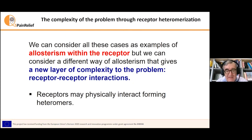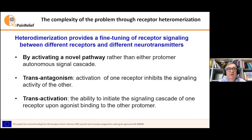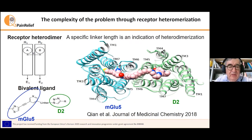We can consider all these cases as examples of allosterism within the receptor, but we can consider a different layer of allosterism that gives a new layer of complexity to the problem: receptor-receptor interactions leading to the formation of heteromers. Heterodimerization provides a fine tuning of receptor signaling by activating a novel pathway — trans-antagonism, that is the activation of one receptor inhibits the signaling of the other, and trans-activation. From a structural point of view, a receptor heterodimer is a system composed of two receptors interacting physically through an interface.